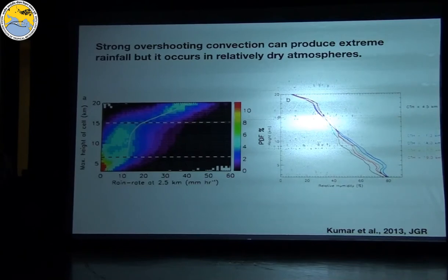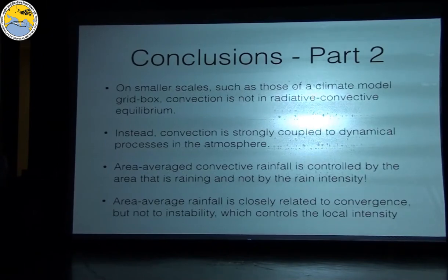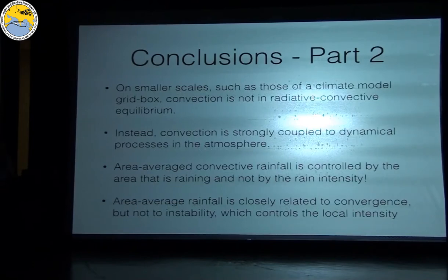Conclusions from this section: on scales of climate model grid boxes, convection is never in radiative-convective equilibrium — it is strongly coupled to dynamical processes. Area-average convective rainfall is controlled by the area that's raining, not by rain intensity. This is counterintuitive but confirmed in several regions. Area-average rainfall is closely related to convergence whilst intensity is closely related to instability.